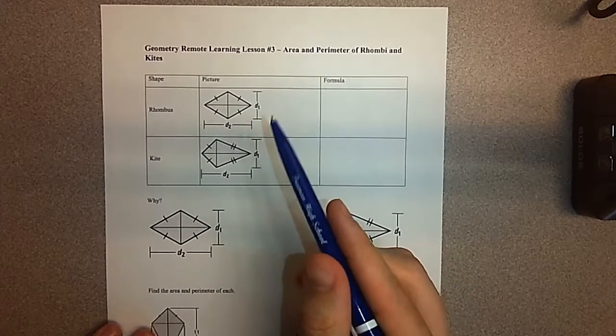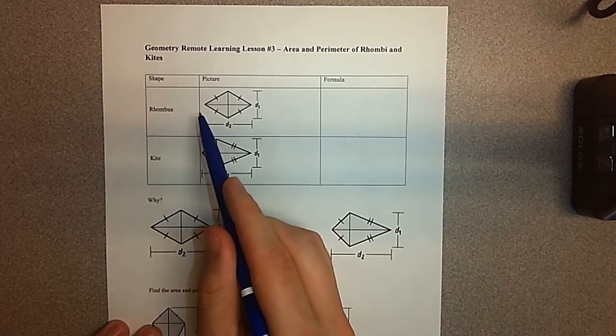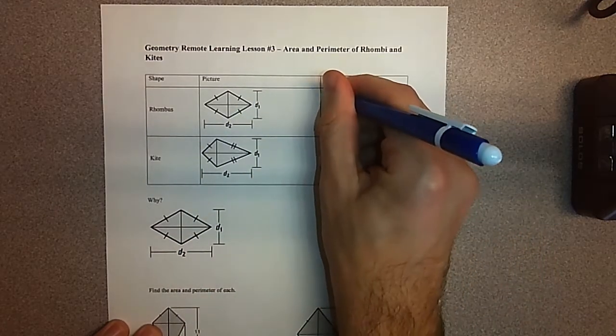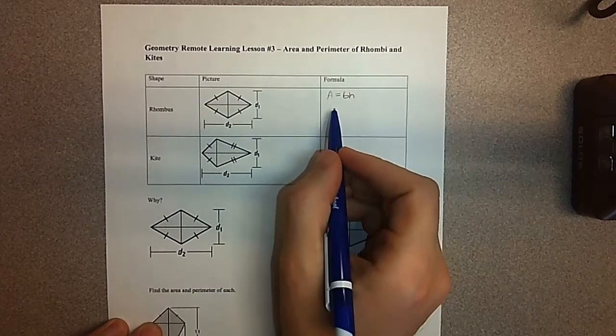We did parallelograms yesterday, and a rhombus is a parallelogram. So just starting off, I gave you a picture here, and you know from yesterday, or just prior knowledge, that area is base times height.